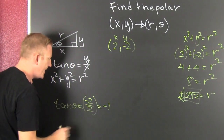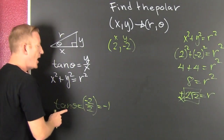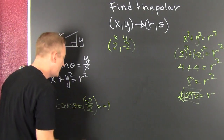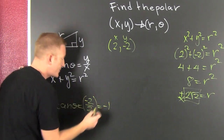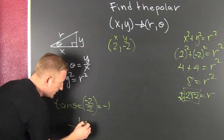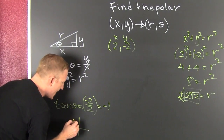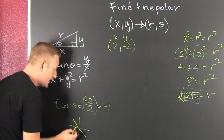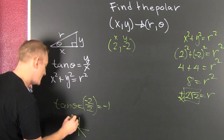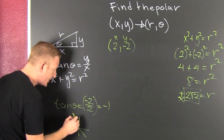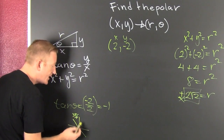Now we're trying to see where our tangent is minus 1. That's when the X's and the Y's are the same magnitude. Does that happen here? Yes. And also down there. Let's just take the first one. This is something over 4 — that's 3 pi's over 4.